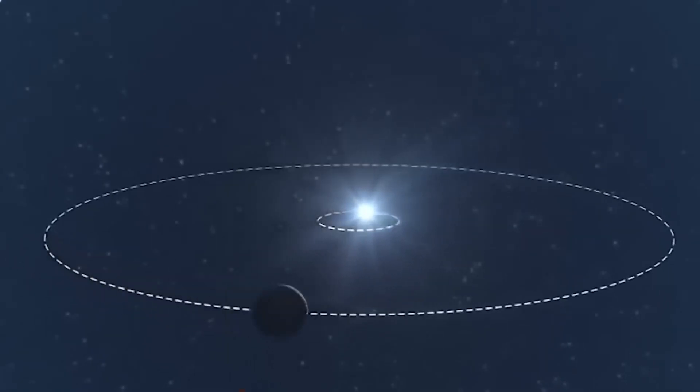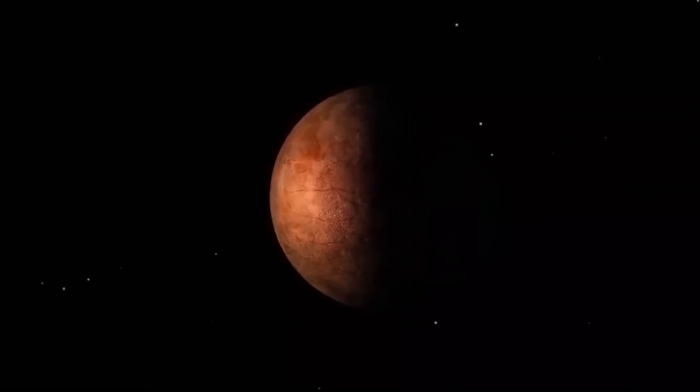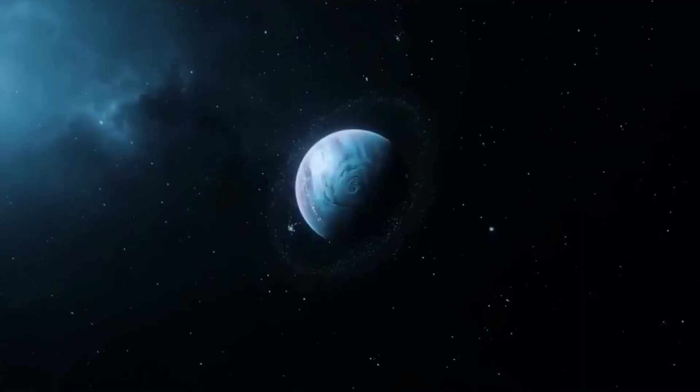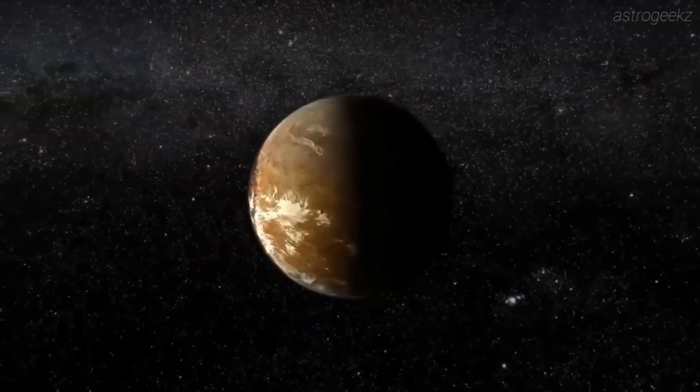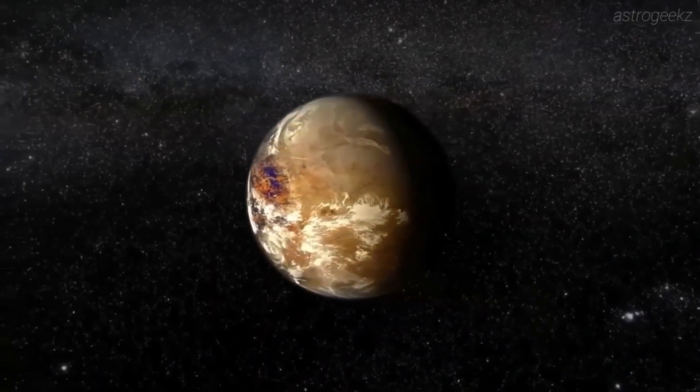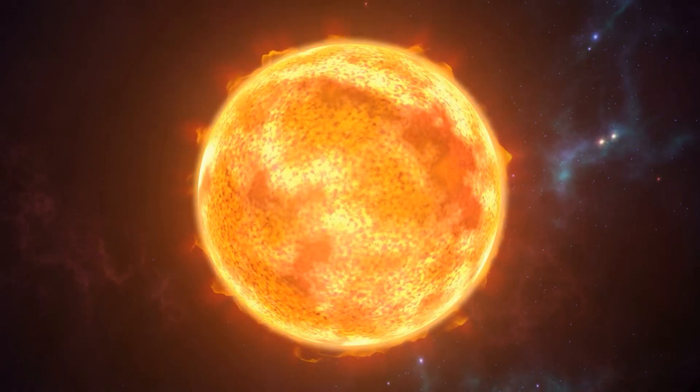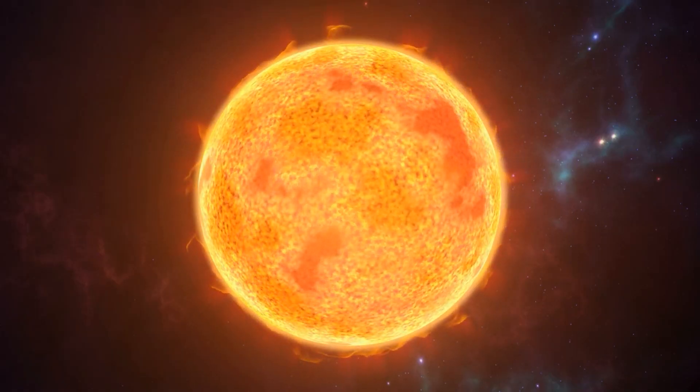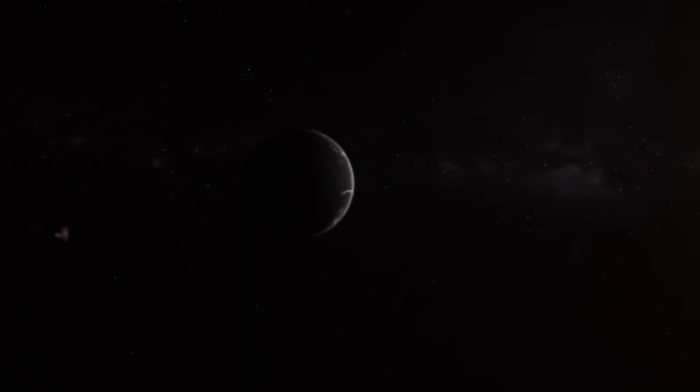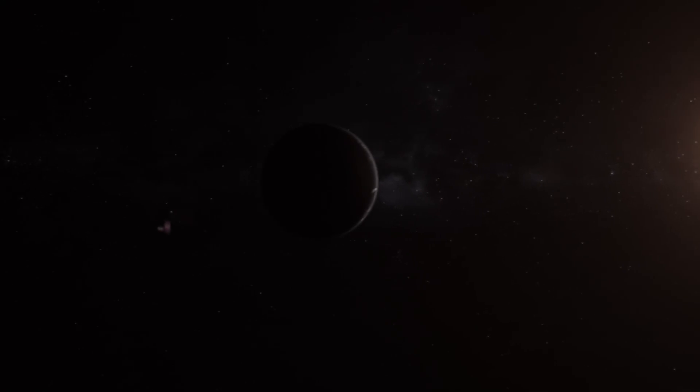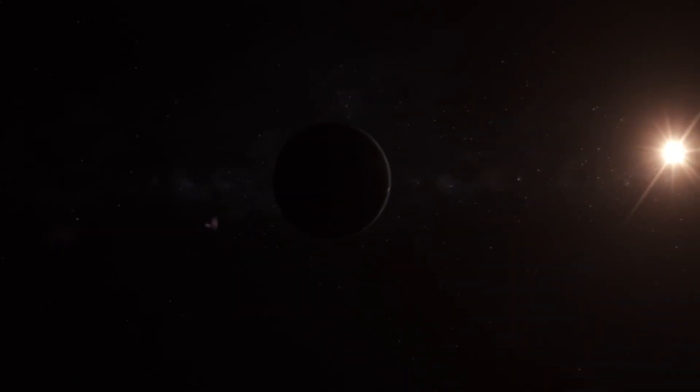Proxima b orbits so closely to its host star that it has become tidally locked. It is the dark half of the planet that is most likely to host intelligent life. For that to be possible, it must have really invested in its lighting infrastructure. Another hypothesis is that very bright orbital mirrors could be used to reflect light onto the night side of the planet. If this were so, it would be seen by our telescopes.